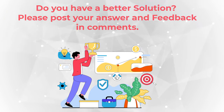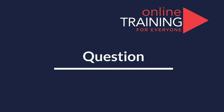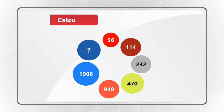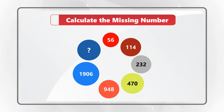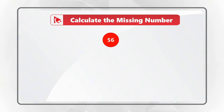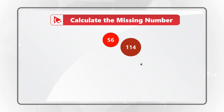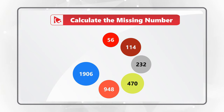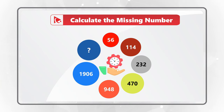Here is an extremely tricky question, but I have full confidence that you'll be able to solve it. You are presented with a sequence of circles organized in a circle. The sequence starts with a red circle with the number 56, then 114, then 232, then 470, then 948, then 1906, and then comes the circle with the missing number. Do you see the answer? Give yourself a little time to find the solution.